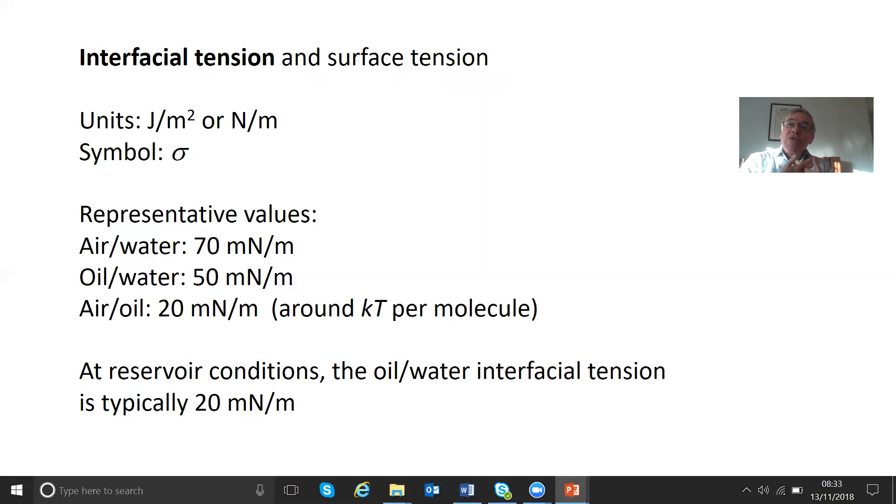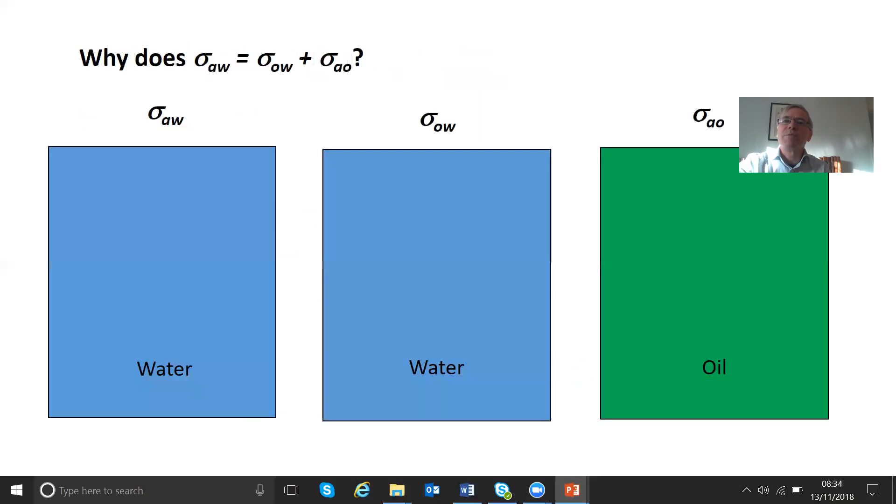That's at ambient conditions, by which I mean room temperatures and pressures. At reservoir conditions, which is a reservoir maybe a couple of kilometers underground at high pressures but also high temperatures, these interfacial tensions are typically about half. So oil and water is about 20 millinewtons per meter.